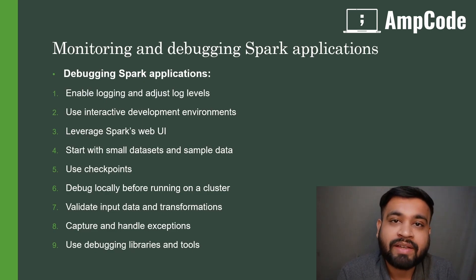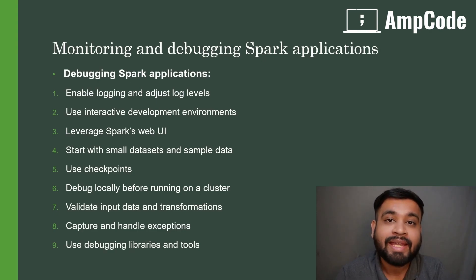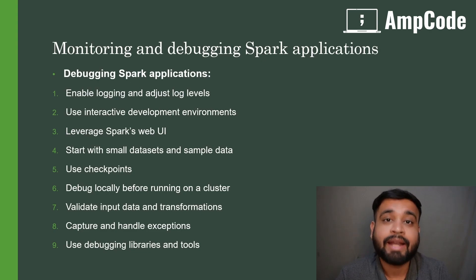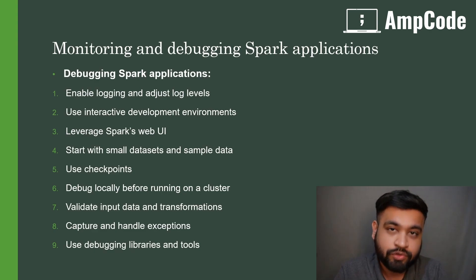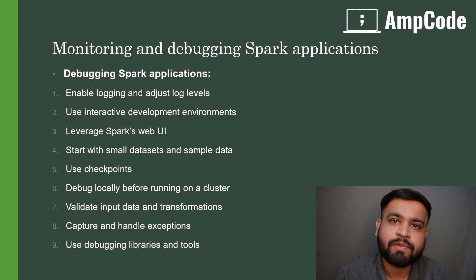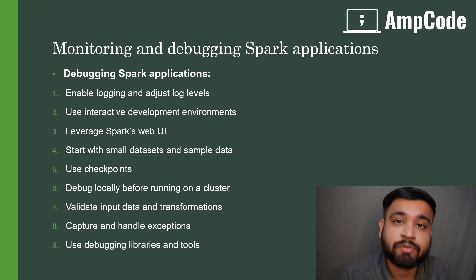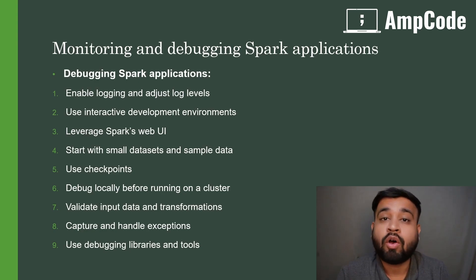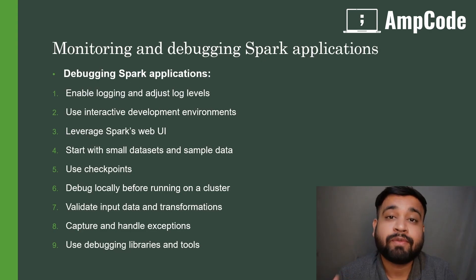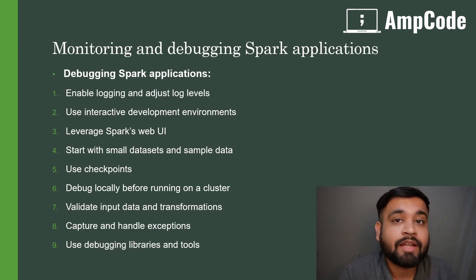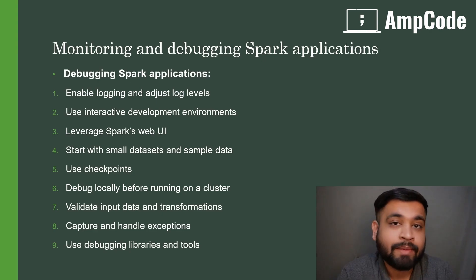Once you kick off your Spark session and start your application, it will only generate those levels of log details in the output. If you want more information about where the application is submitted and all the steps it is doing under the hood, you should use the INFO level. If you only want warnings, use the WARN level. If you only want to check for errors, set the log level to ERROR.